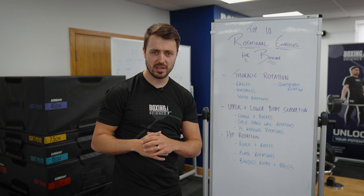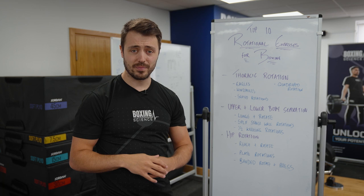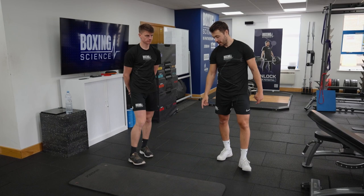We can improve thoracic rotation through a range of exercises: eagles, windmills, seated rotations, and quadruped rotations — something we utilize in more or less every single Boxing Science session. Let's have a look at these exercises before we move on to the next section.